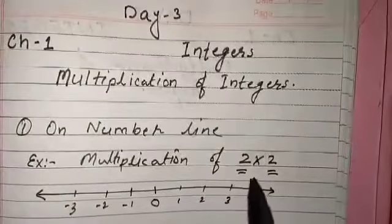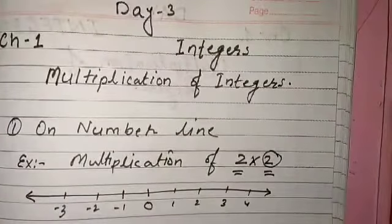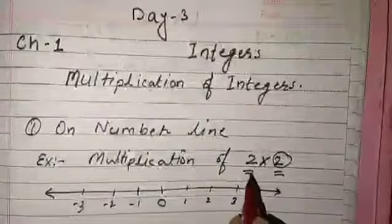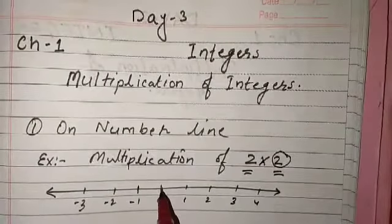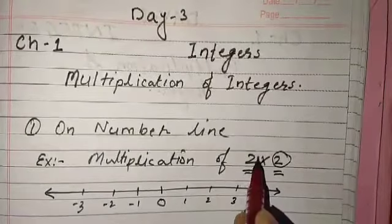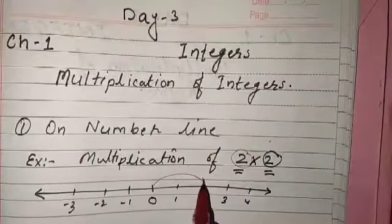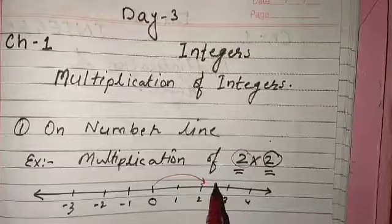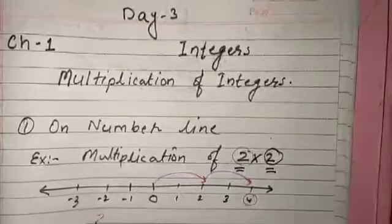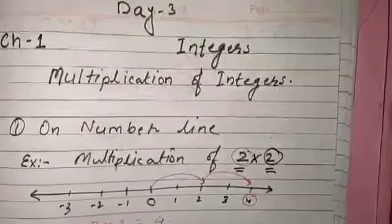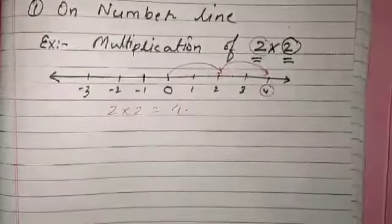For the example 2 × 2: two is to be multiplied two times. For a positive number, it means we count on the positive side — that is, the right-hand side. The step size is two, and we take two steps: step one and step two. We reach four. So the answer for 2 multiplied by 2 is equal to 4.